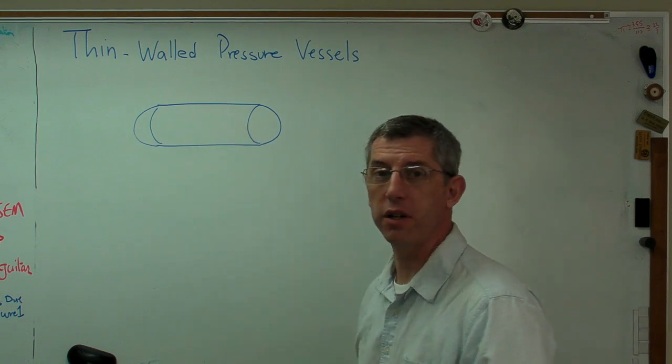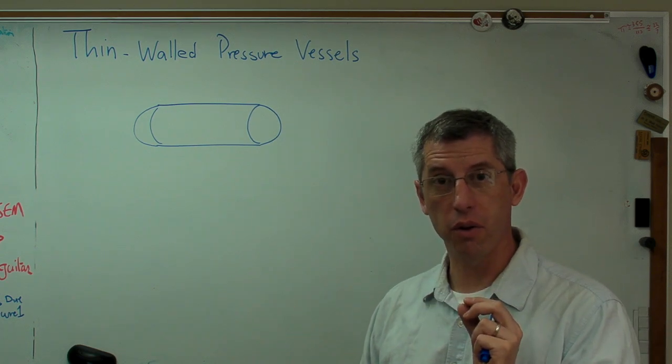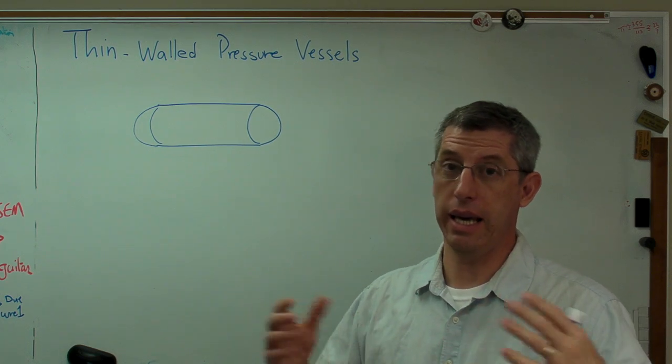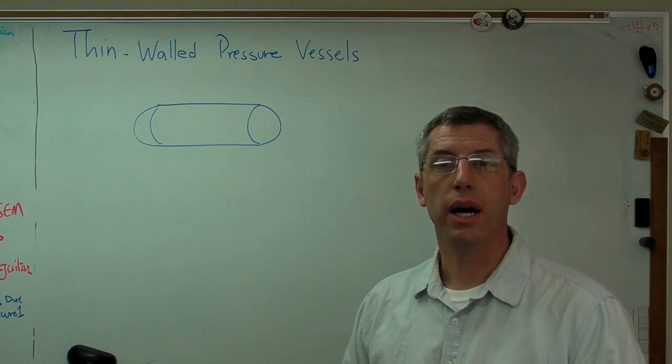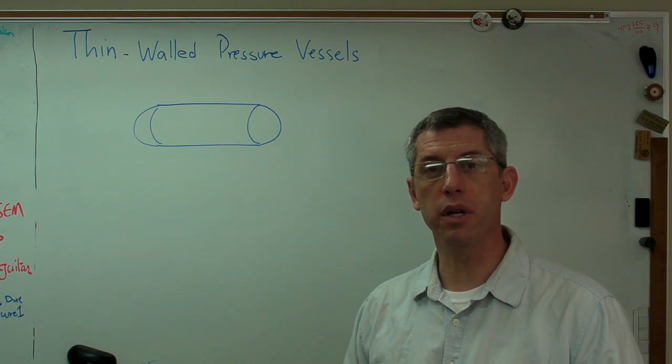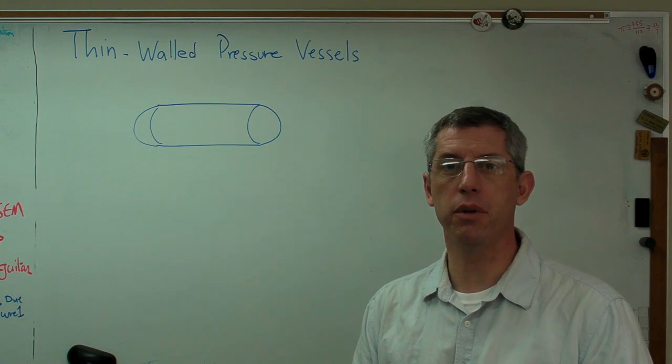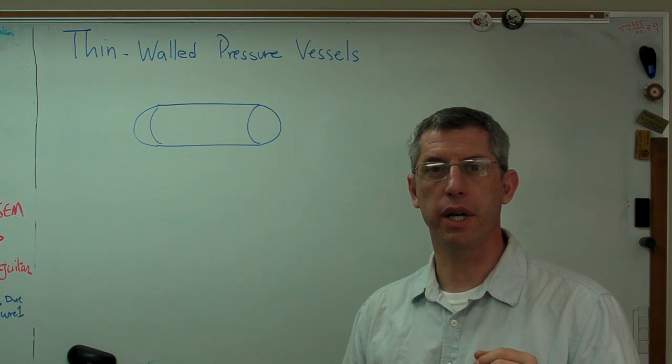So thin wall pressure vessels have large diameter compared to the wall. Now the wall could be thick if the diameter is big enough. I saw a submarine in a museum one time and they had the side of it cut open. This is up in the museum in Chicago, Museum of Science and Industry.